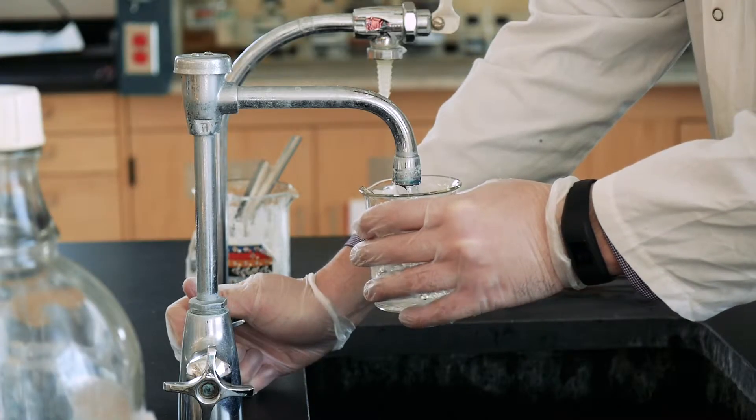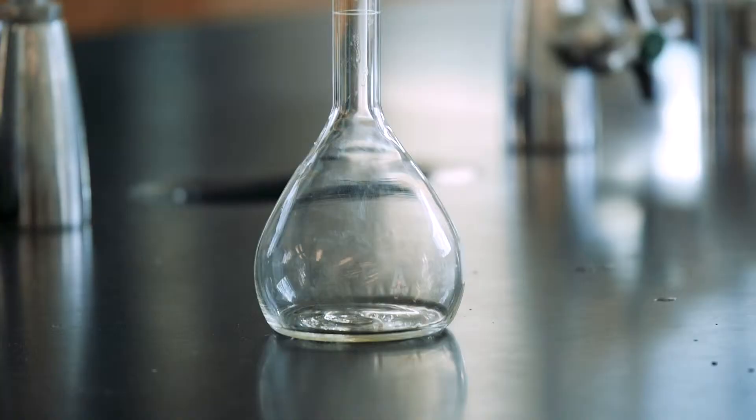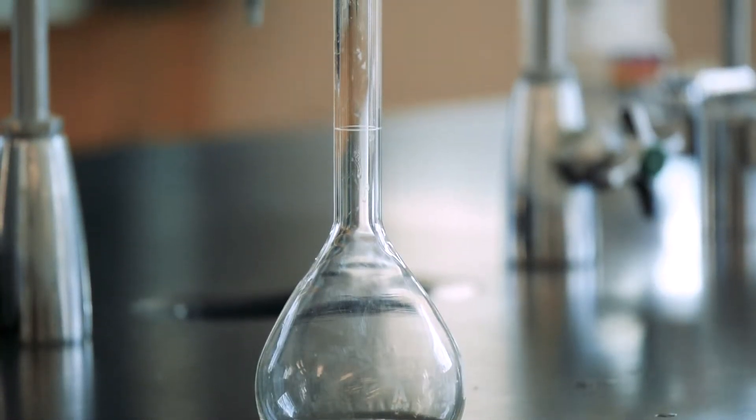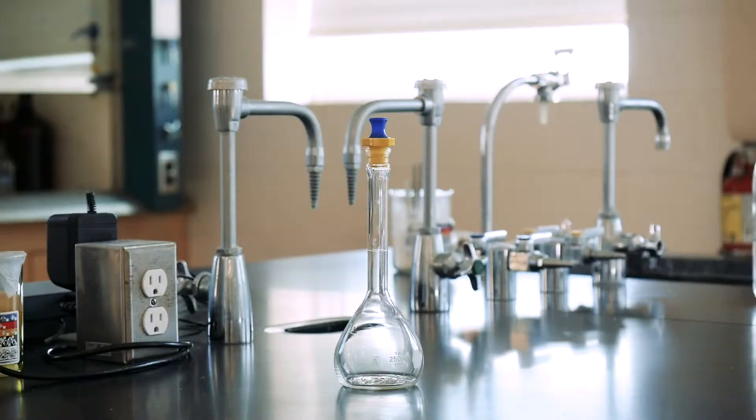Next, fill the flask half full with tap water to rinse. Drain and repeat five times or more until you don't see any more bubbles. Repeat the rinse two more times, but with deionized water, and your flask should be all clean.